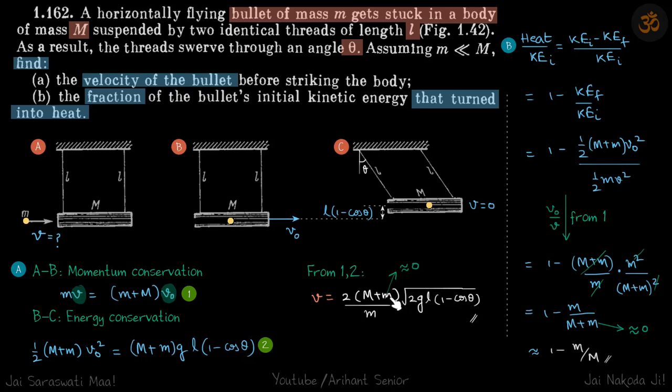Here we are given that the mass of the bullet is much less than the setup. So this comes to be (2M/m)√(2gL(1-cos θ)), our answer.